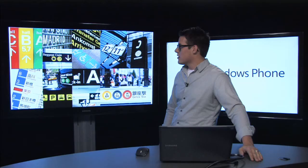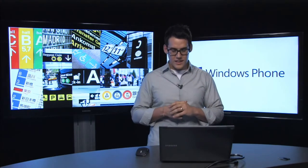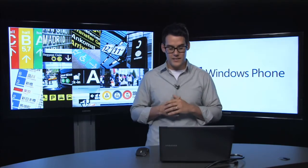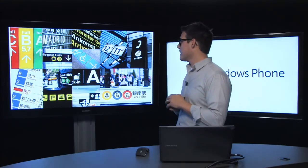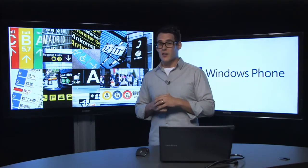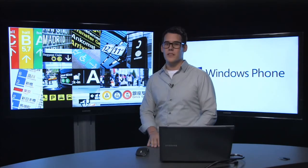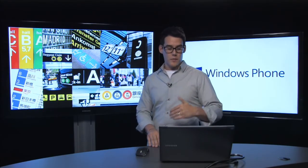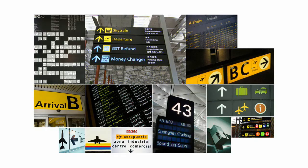Our first step in building Metro was not to look at other phones, computers, or software out there. We stepped back and looked at how users navigate information in their everyday activities. Our team had the inspiration of transportation graphics. Whether at Narita or JFK, these graphics are used to get someone from point A to point B in a cross-cultural, cross-language, quick and direct way. You'll notice the iconography and simple, consistent typography across all of these.